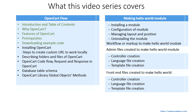What this series covers is shown in the following table of contents. First, I will describe what OpenCart is, then why OpenCart, then show features of OpenCart, prerequisites, and downloading example codes from GitHub. In the second video, I will show how to install OpenCart and create a custom URL in localhost. In the third video, I will describe the files and folder structure of default OpenCart.